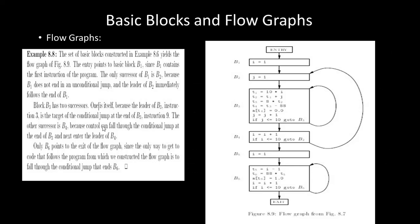This is the example of the flow graph from our previous example. The successor of B1 is B2 because B1 does not end in an unconditional jump and the leader of B2 immediately follows the end of B1. Block B3 has two successors: itself and B4. Likewise we construct the full flow graph.